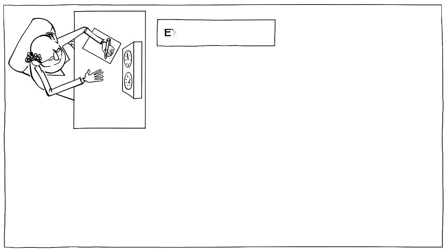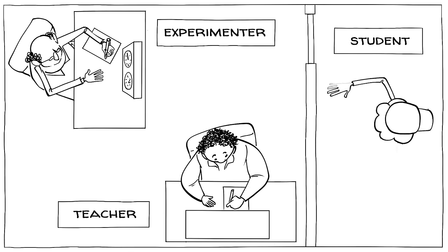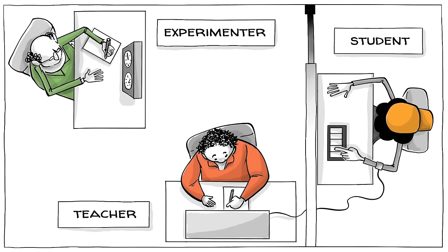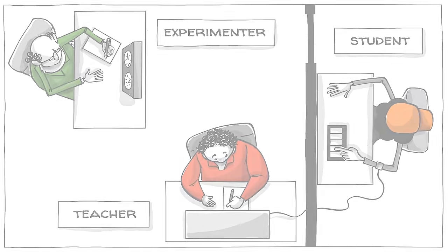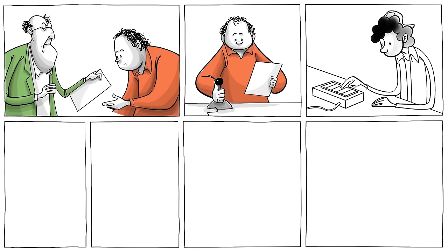To start, the experimenter and the teacher were seated in one room, and the student was strapped to a chair in an adjacent room. The teacher and student were able to communicate, but not see each other. The experimenter then gave the teacher a list of questions. The teacher would then read out the questions, and the student would press a button to indicate a response.